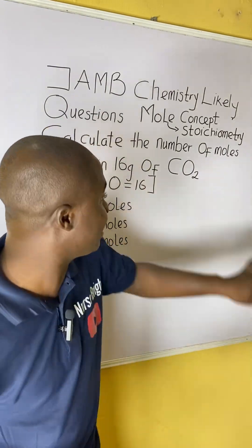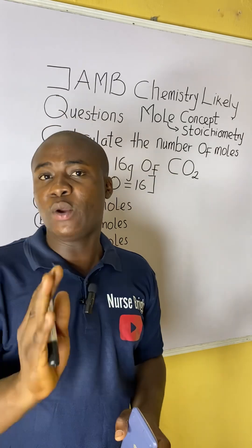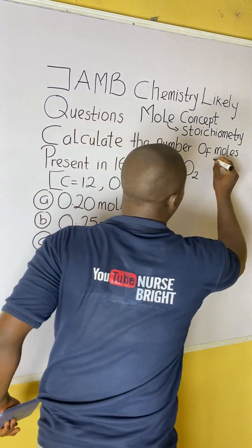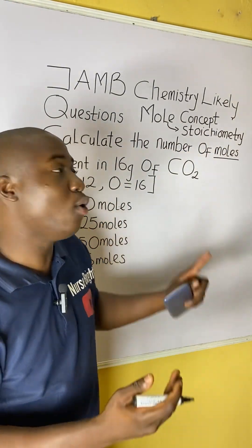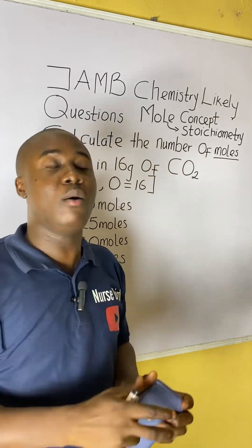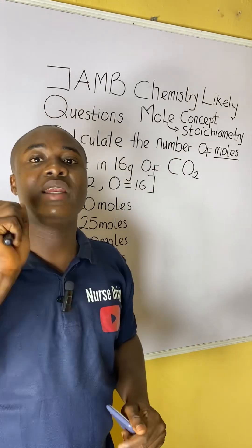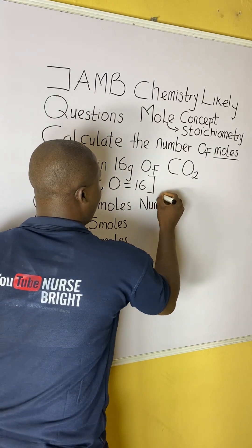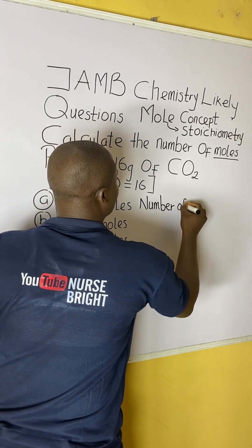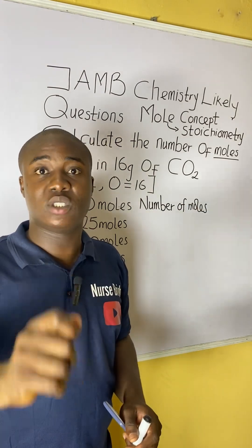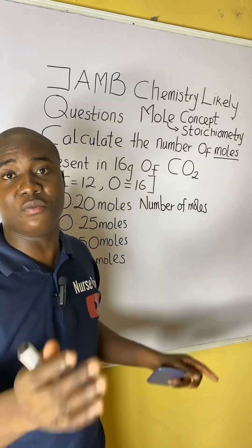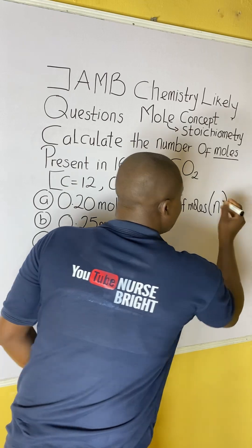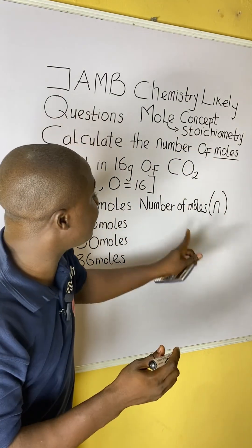Listen carefully. Let me quickly tell you why I said this is a mole concept question. It's very simple — I saw 'moles' in this question, so it tells me this question must be from the mole concept. Now let us identify what the question is asking us to solve for: the number of moles. The number of moles is given the symbol lowercase 'n'.